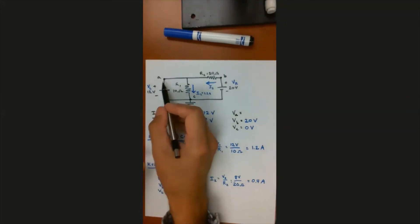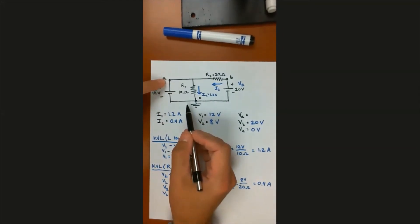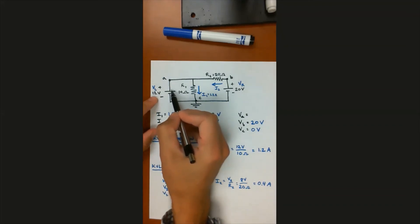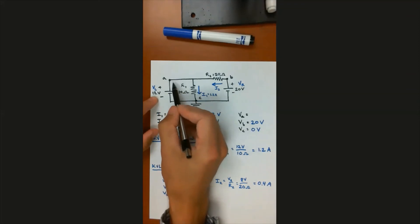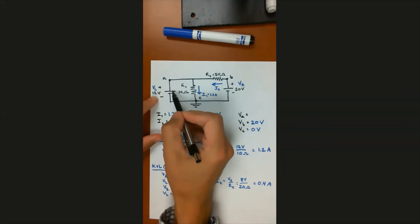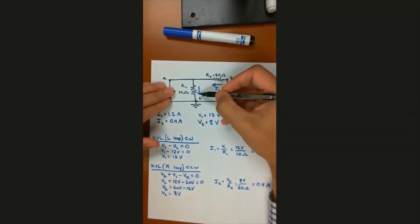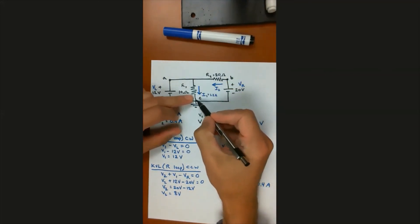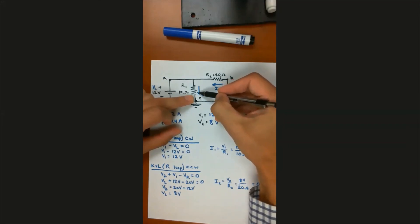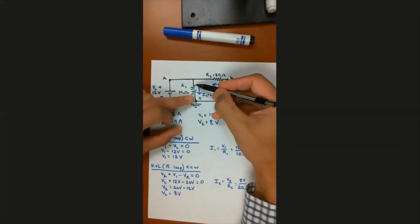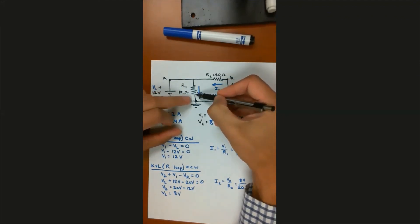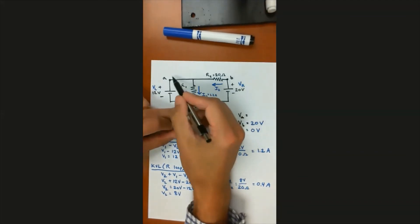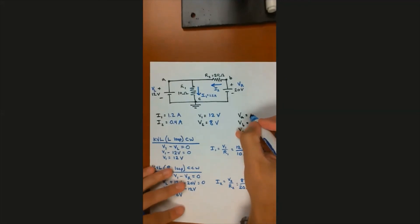Last one is the voltage at node A. The easy way is to go through the left voltage source: starting from 0 volts at ground, going from negative to positive I gain 12 volts, so node A is at 12 volts. Everything connected by wire along that top rail is at the same voltage — it's all node A at 12 volts. Alternatively, if this node is at 0 volts and I dropped 12 volts across resistor one, then I must be at 12 volts at the top of R1, confirming voltage at A is 12 volts.